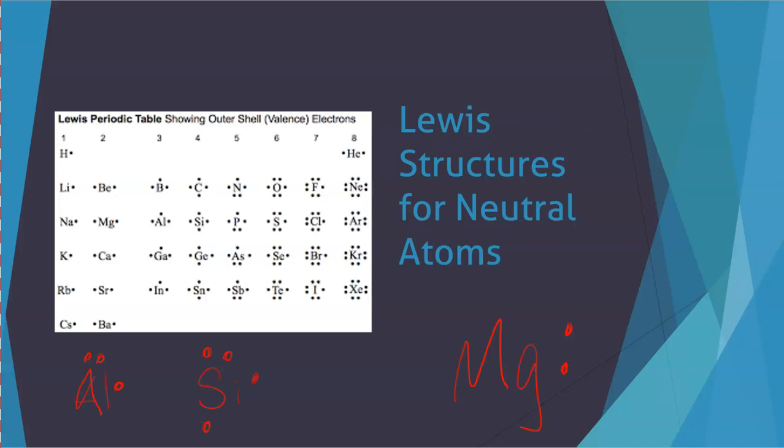I do separate the p electrons, so nitrogen or phosphorus is going to look just like it does in the figure there.